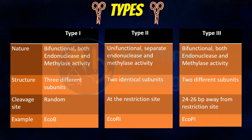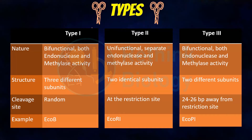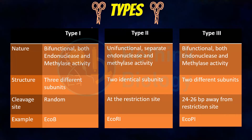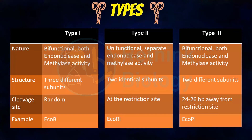Lastly, Type III restriction endonucleases, which are bifunctional in nature and have two different subunits. They can cut the DNA at 24 to 26 base pairs 3-prime to the restriction site. An example is EcoP1.